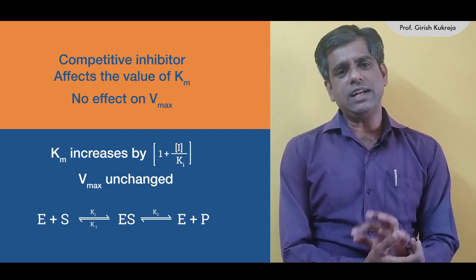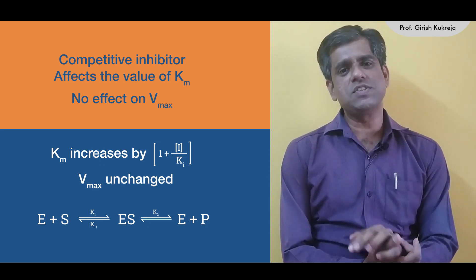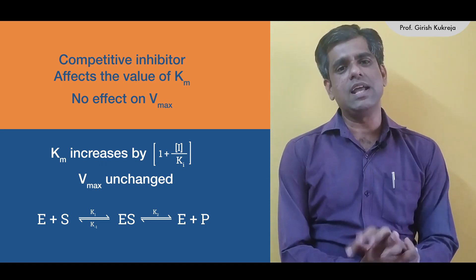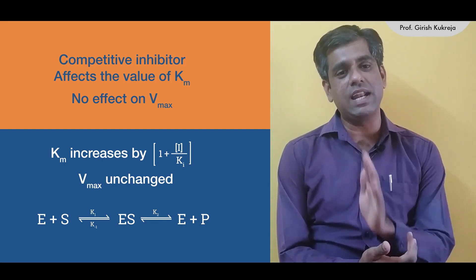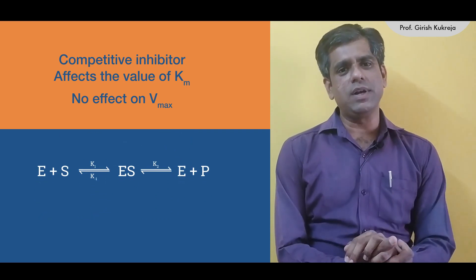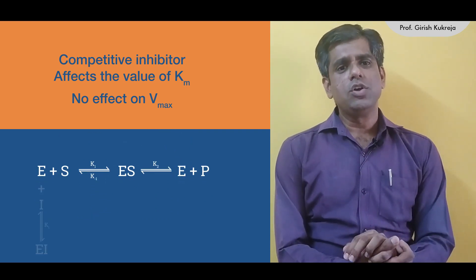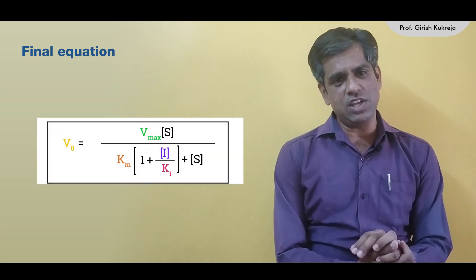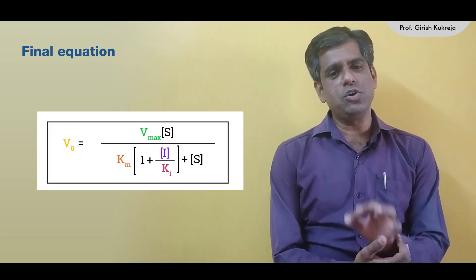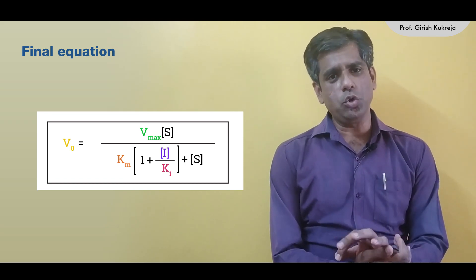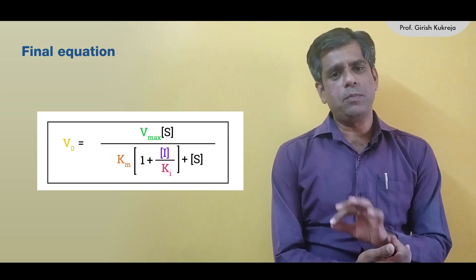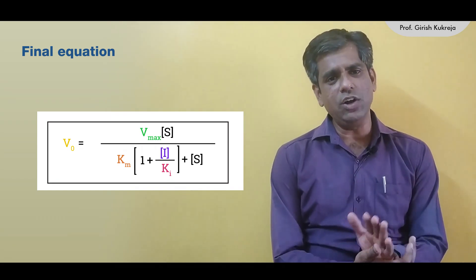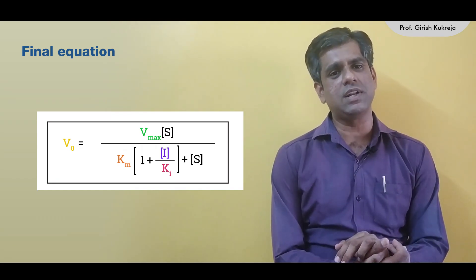In a typical enzyme-catalyzed reaction, E + S gives ES, which further gives E + P. In the presence of a competitive inhibitor, which binds only the free enzyme, E + I gives EI as a dead-end complex. When we treat this in kinetic form, we arrive at a final equation: V0 = Vmax · S / (Km · (1 + I/Ki) + S). Let us now look at the detailed derivation.